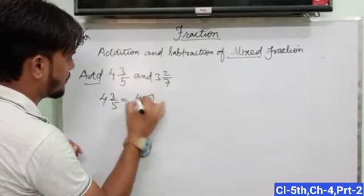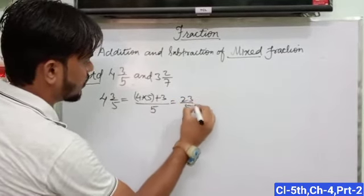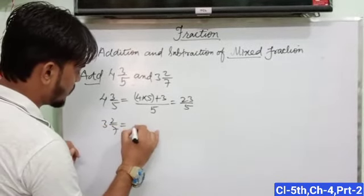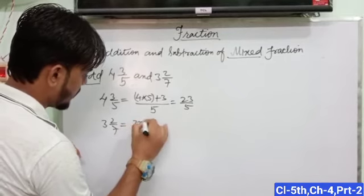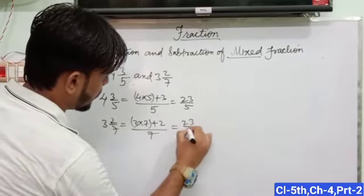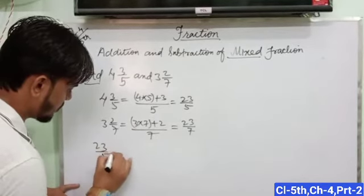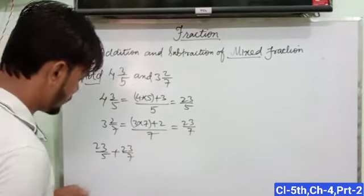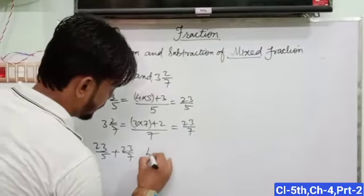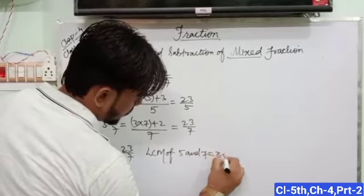4 into 5 plus 3 upon 5 equals 23 upon 5. And 3 and 2 upon 7 is equal to 3 into 7 plus 2 upon 7, which equals 23 upon 7. We have different denominators, so we will get LCM of 5 and 7. This is equal to 35.